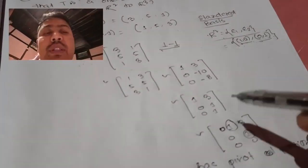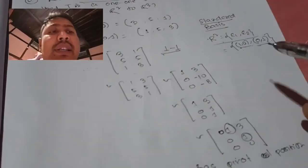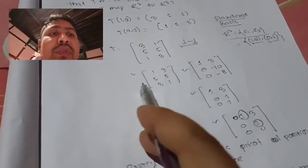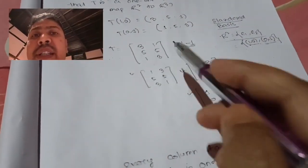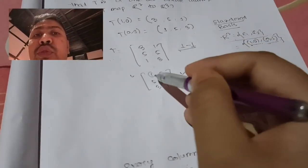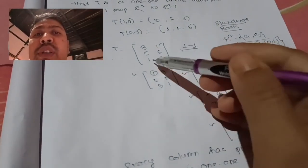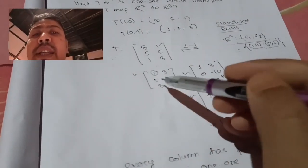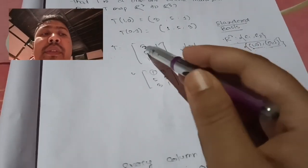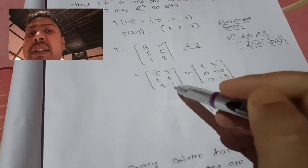First, I will do row reduction. The matrix is [3 1; 5 5; 1 3]. The first non-zero leading entry should be 1. In the first row, I have 3, so I will do row interchange. I will swap row 1 and row 3 to get [1 3; 5 5; 3 1].